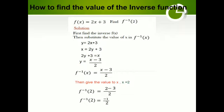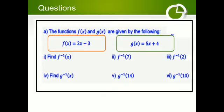Some questions are there. Look at f of x is equal to 2x minus 3, and g of x is equal to 5x plus 4. There are two separate functions. Number one: you have to find f inverse 7. After finding f inverse, you have to find f inverse 2 — follow the method and calculate by yourself. Second one: the second equation is g of x is equal to 5x plus 4. Here also we have to find g inverse 14 and g inverse. Calculate by yourself.